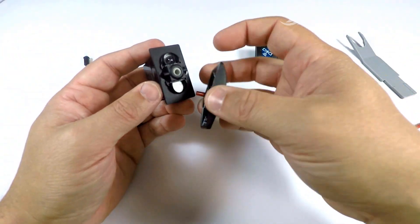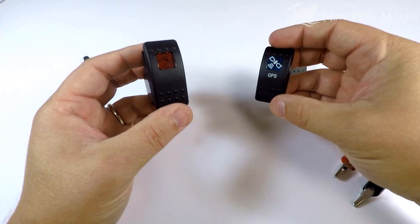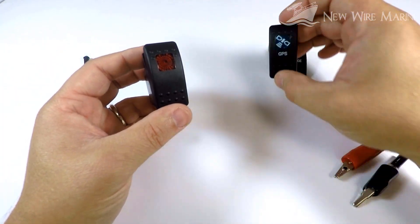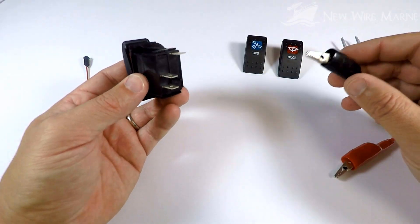We sell it as a standalone switch body and as a combo with an actuator. We carry the printed actuators with all the marine loads with blue and red lenses. Now let's look at the wiring.